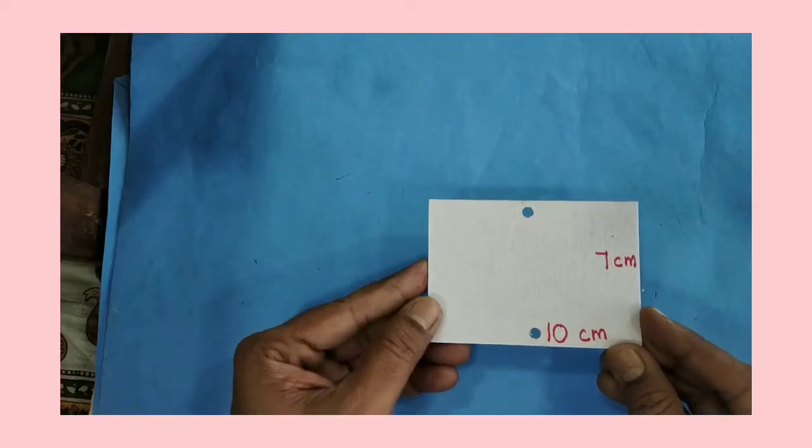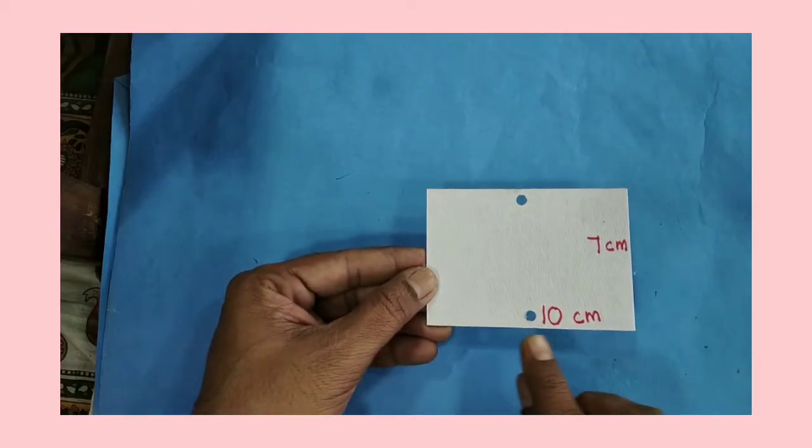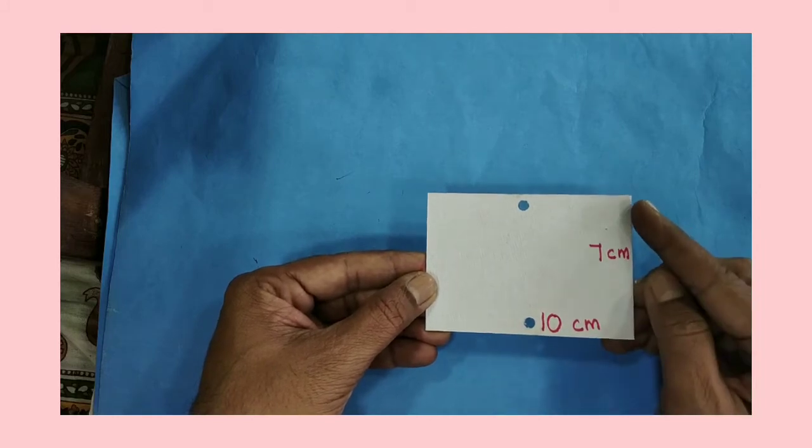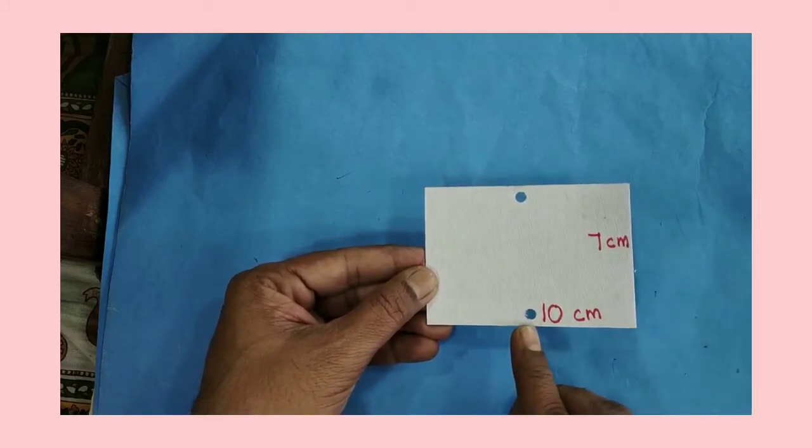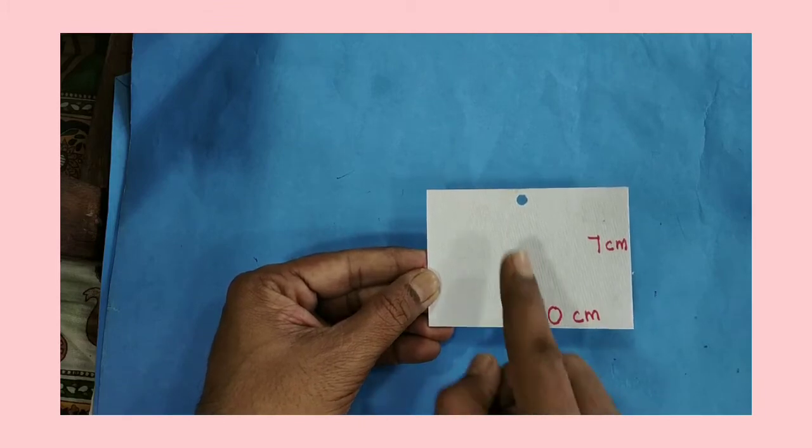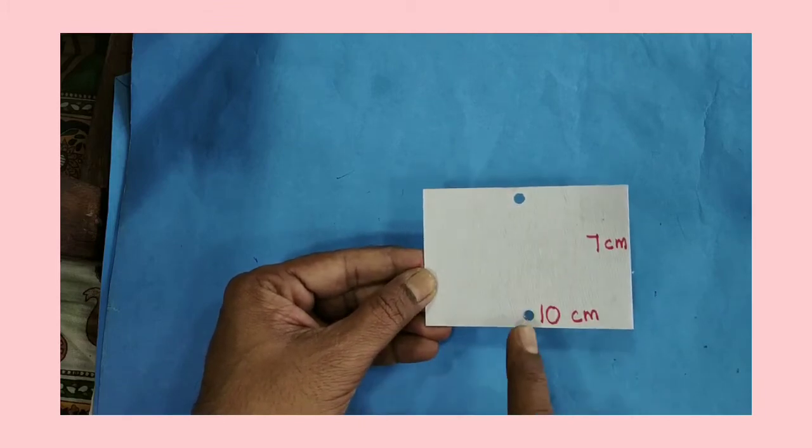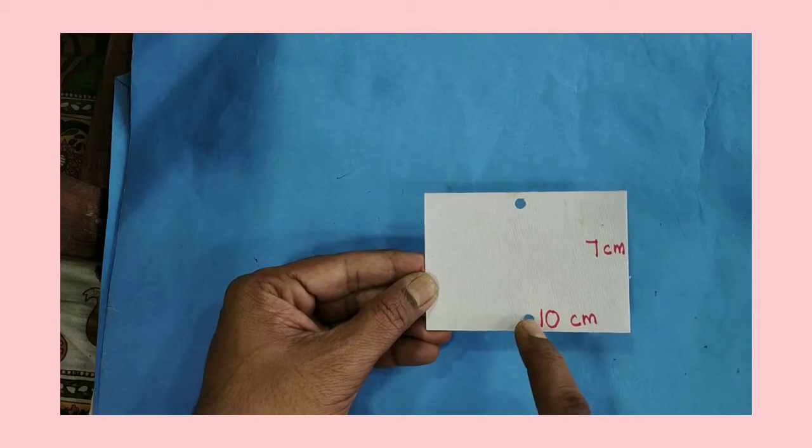Cardboard sheet, 10 cm length and 7 cm breadth. 5 cm here, make holes. Either one and either one, exactly opposite to each other.